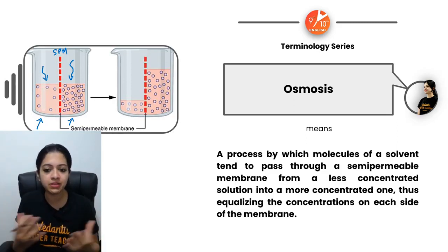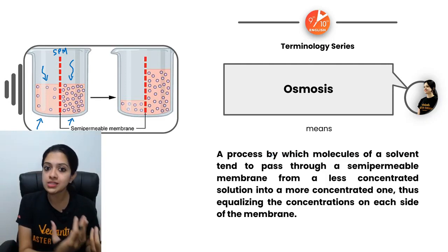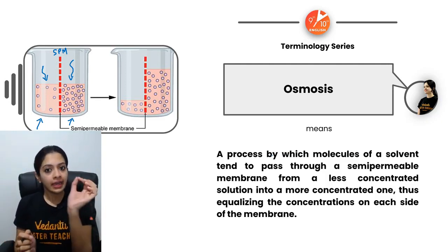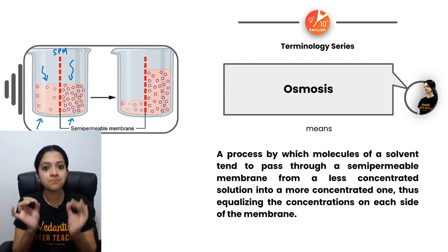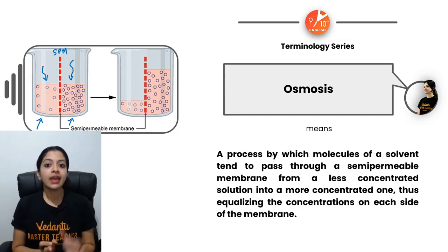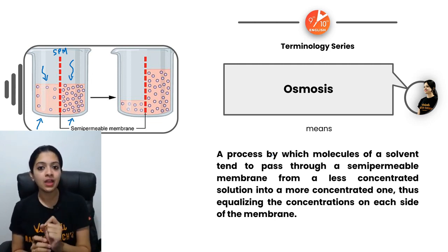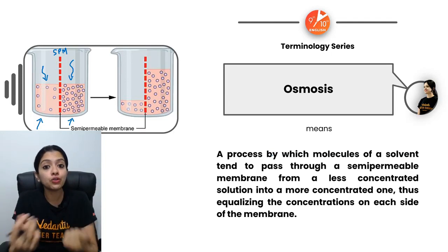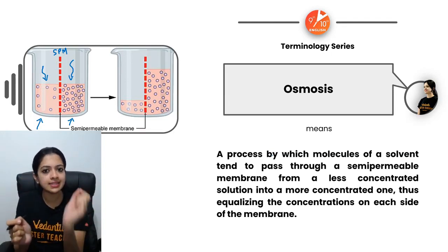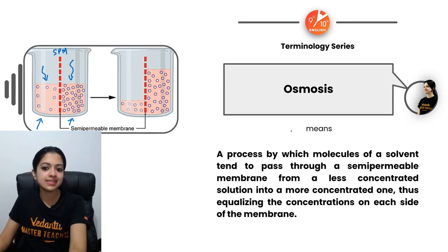One very important basic rule: whenever you come across a question related to osmosis or tonicity, remember this — when a solution is described as 'concentrated,' it means there is a lot of solute concentration in it. If someone specifies there is a lot of water, they would say 'high solvent concentration.' Just 'concentration' alone means solute concentration. Keep this in mind to avoid confusion.